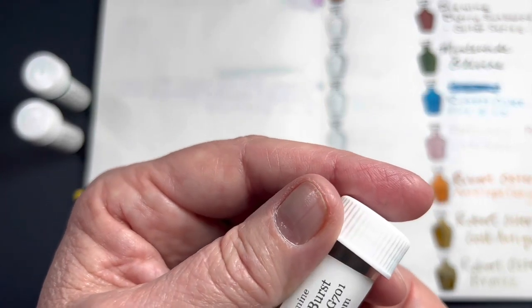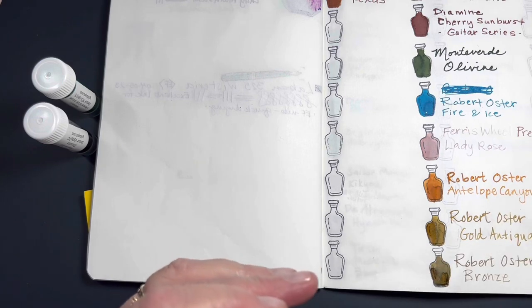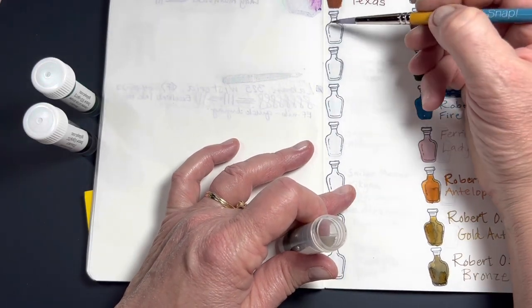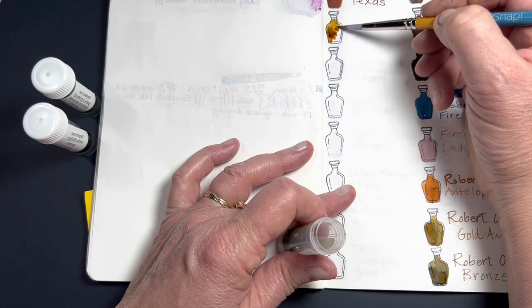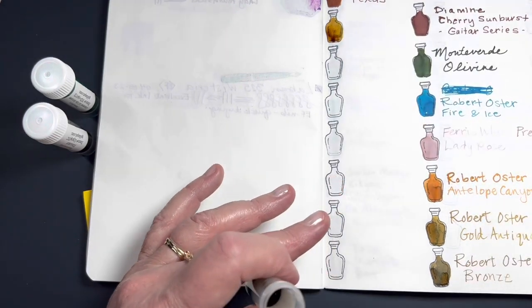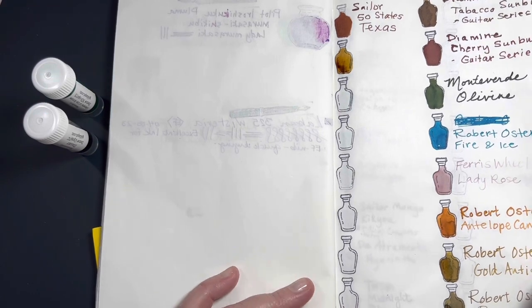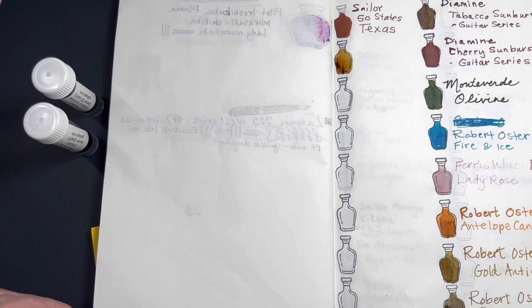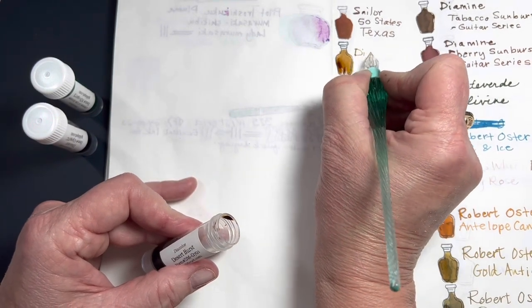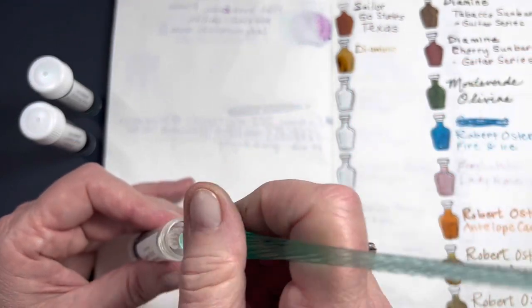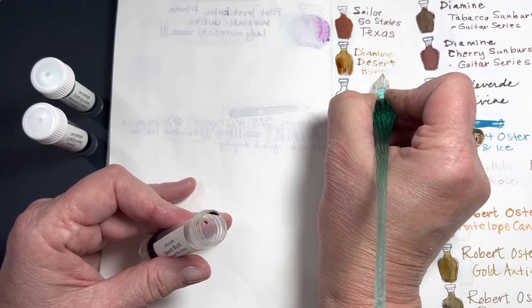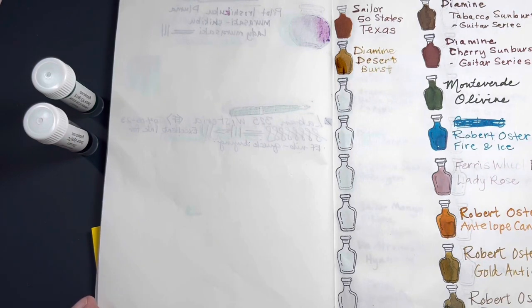We'll start with Diamine Desert Burst. Again, this is from Goldspot. And my, I should have started on this side. Again, another beautiful ink. I like it. Oh, wow. Make sure I'm in frame. Sorry about that. And it is Diamine Desert Burst. Nice. Nice, nice, nice.